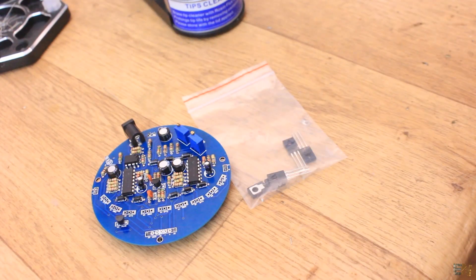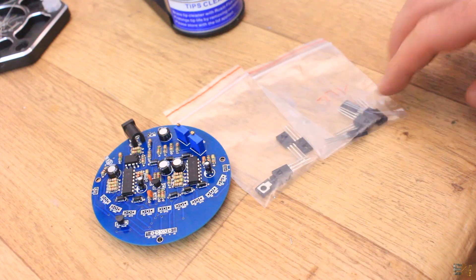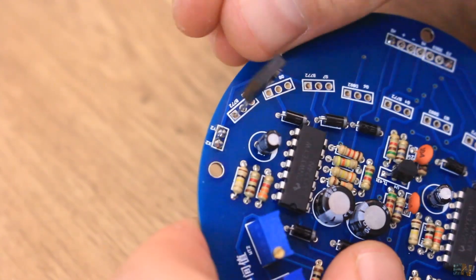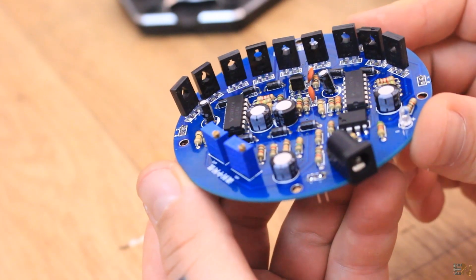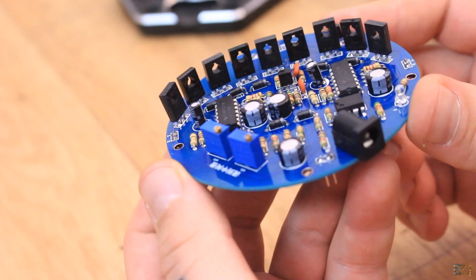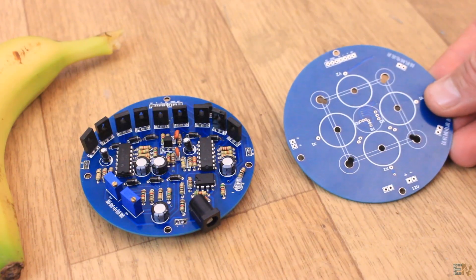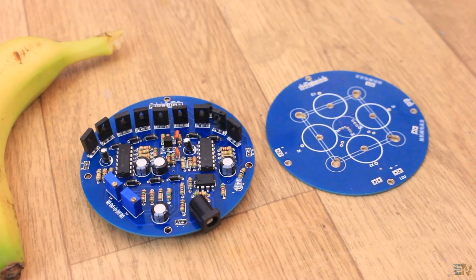Now I finally solder all the transistors. We have two types, the NPN and the PNP transistor and we have labels for that placed on the PCB as well. Now that all the components are placed for the first PCB, let's see the second PCB. This will be more simple.